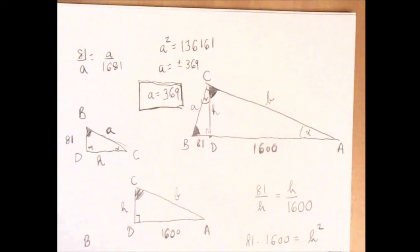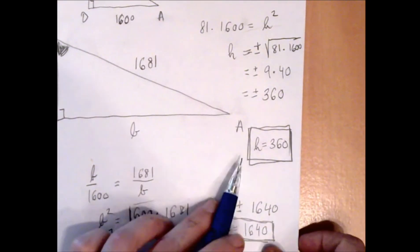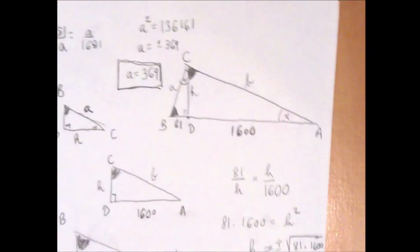We rule out the negative one because we are looking for a distance. That gives us a equals 369. So we got a is 369, b is 1640, and h is 360.